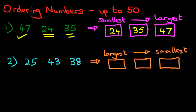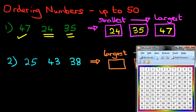So, largest to smallest. Right. So, these are our three numbers. 25, 43, 38. And don't forget, we are trying to find the largest number. Not the smallest, but the largest. So, let's pull up our number grid.